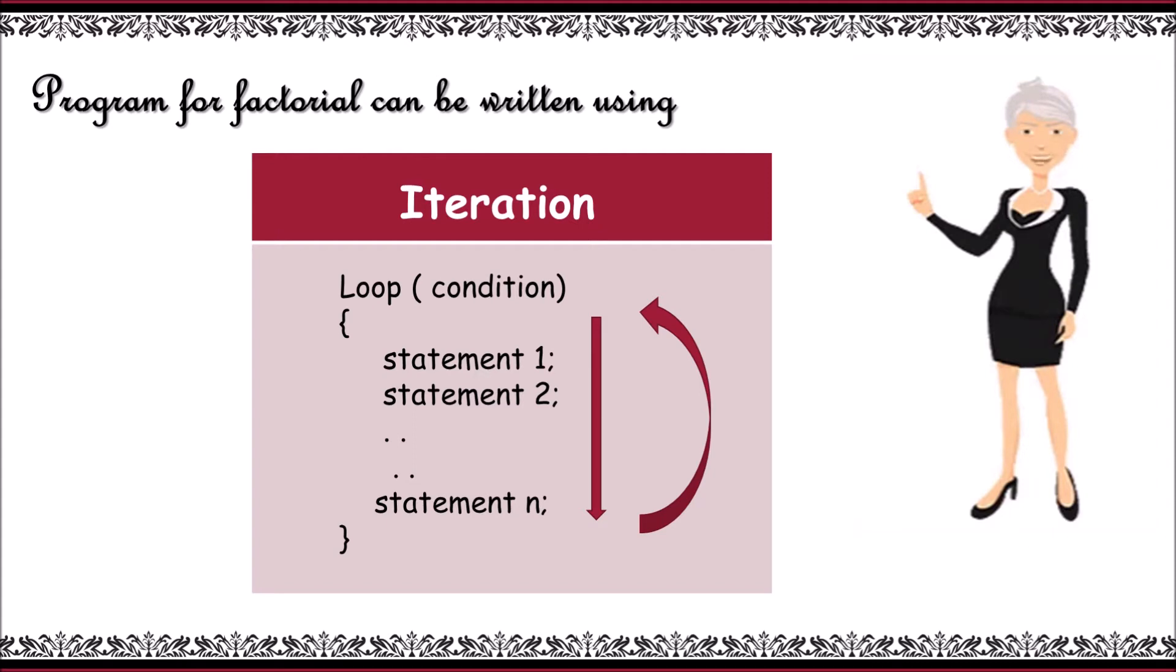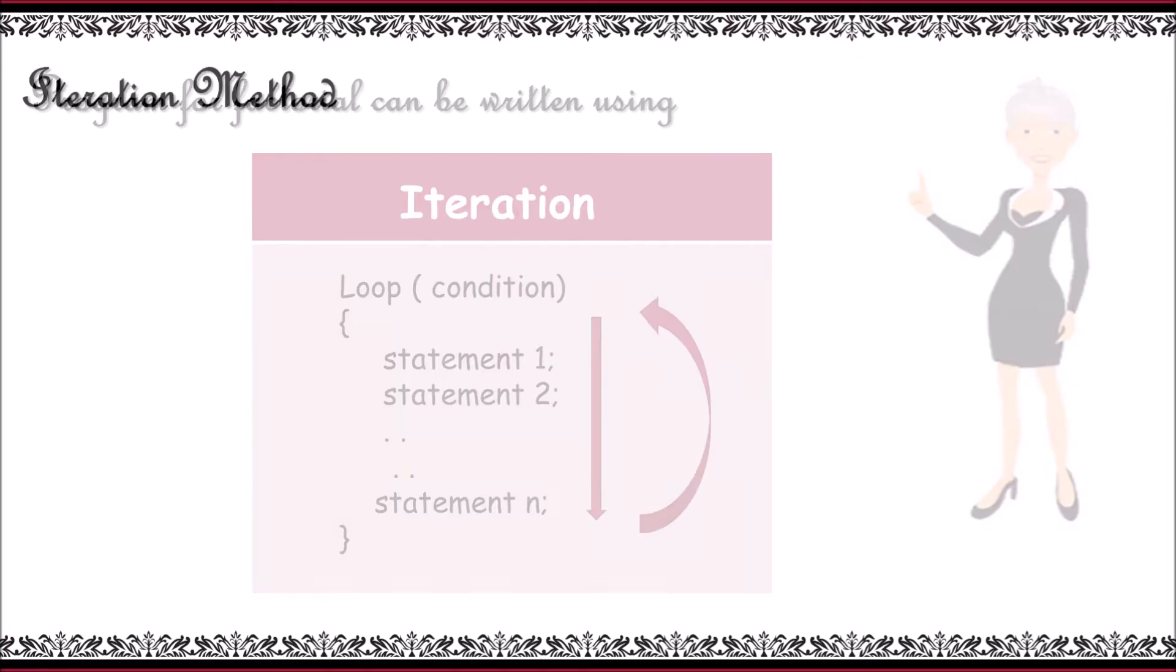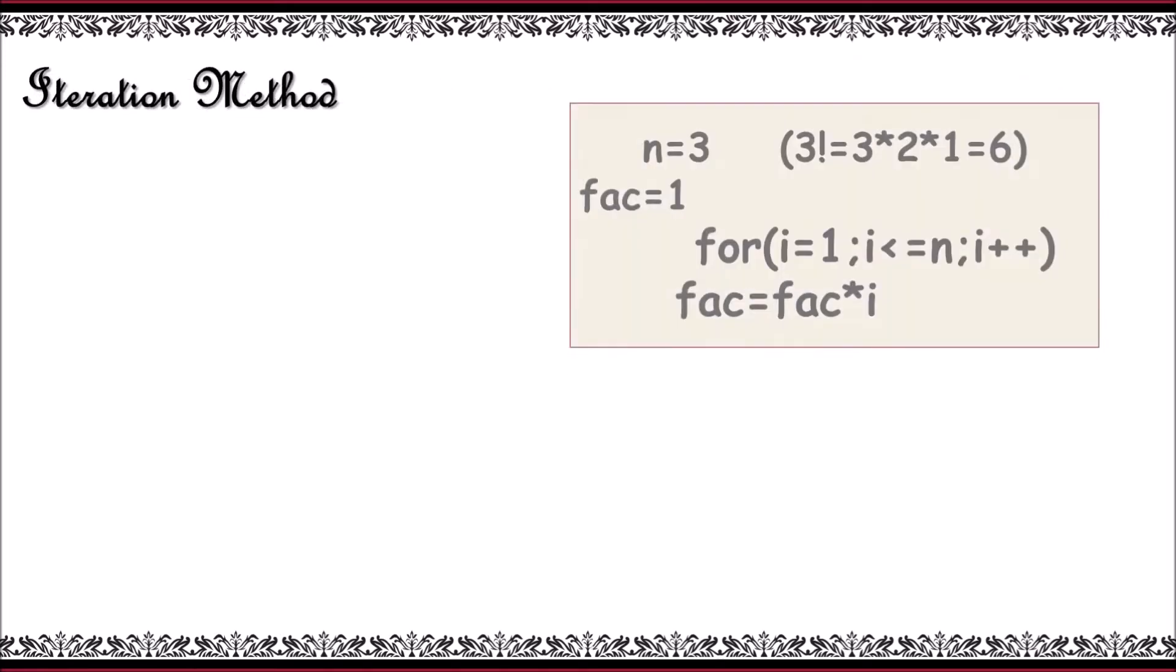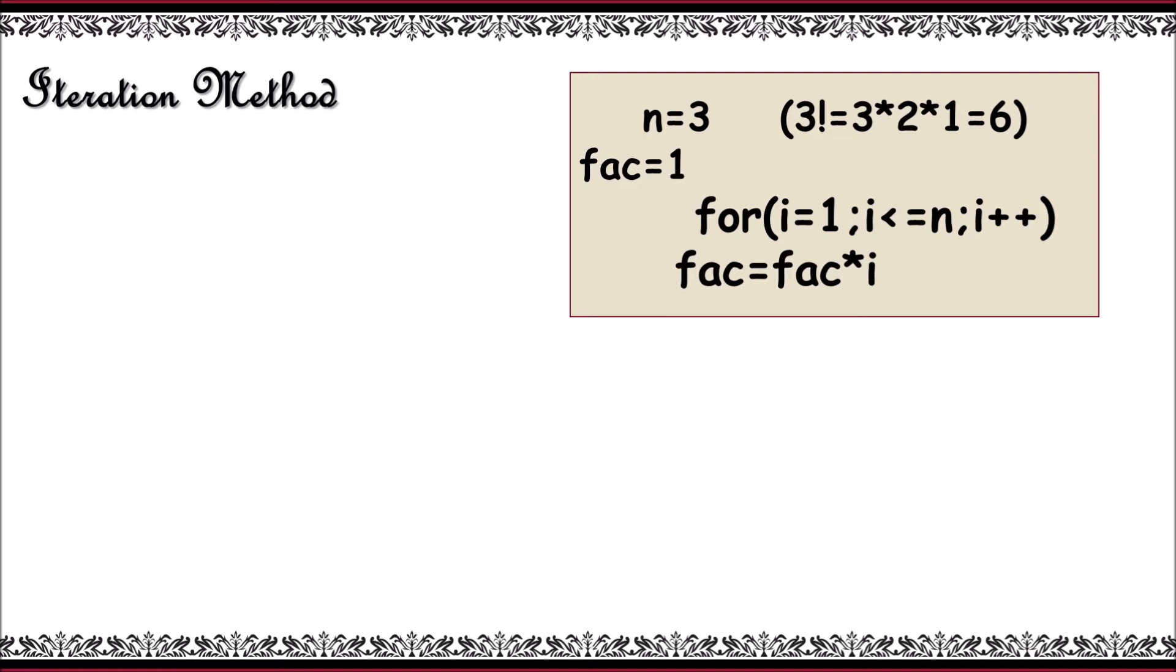Let me explain this particular concept with the help of an example. If we wanted to find the factorial of 3, it goes like this: 3 into 2 into 1. Always the product of any particular value starts with 1, so I have initiated the fact value with 1.